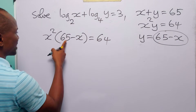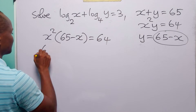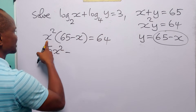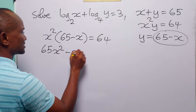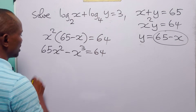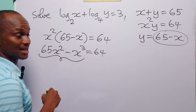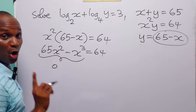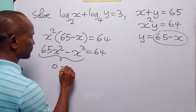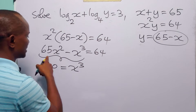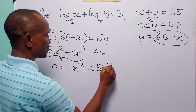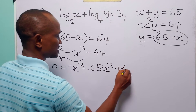When we expand this we have 65x squared minus x cubed is equal to 64. Moving these terms over to the right hand side we have zero on the left and x cubed minus 65x squared plus 64 on the right.